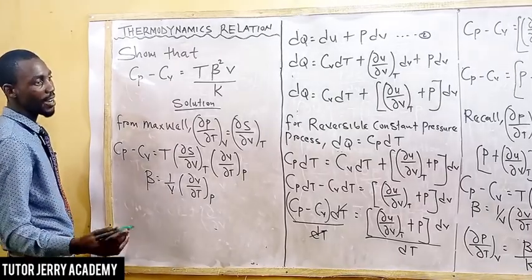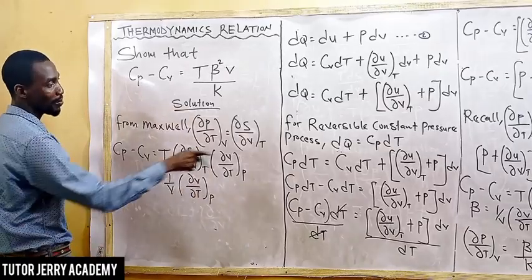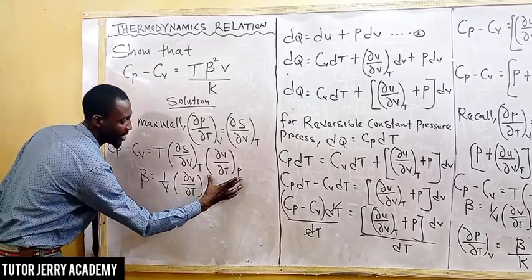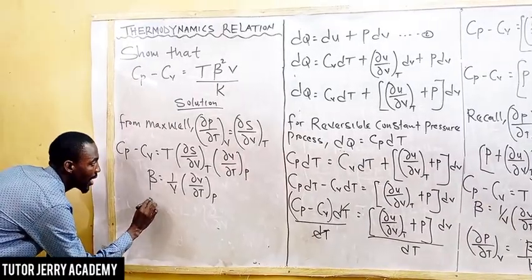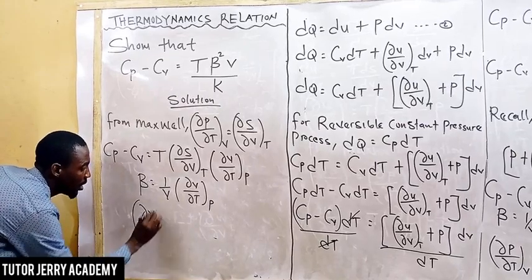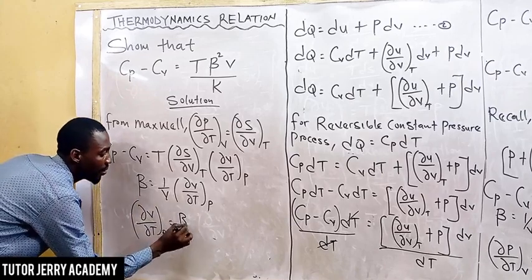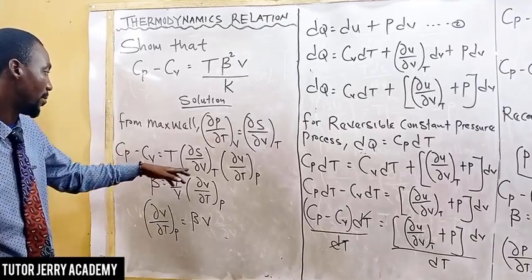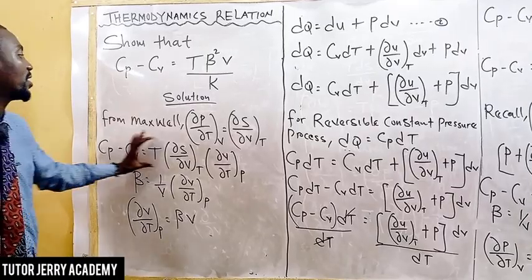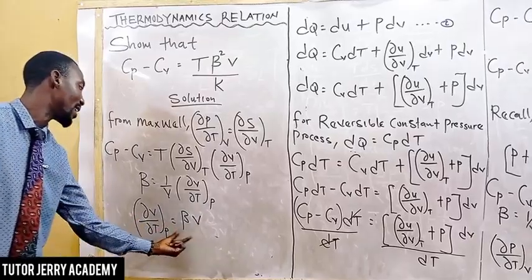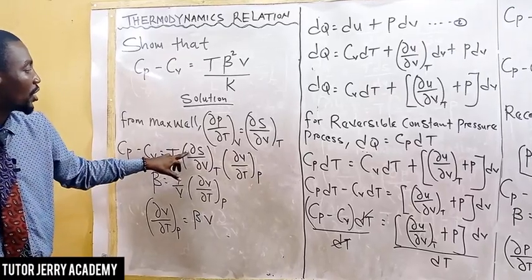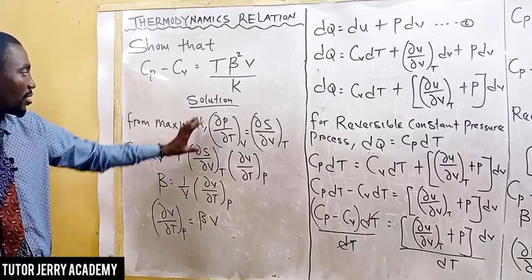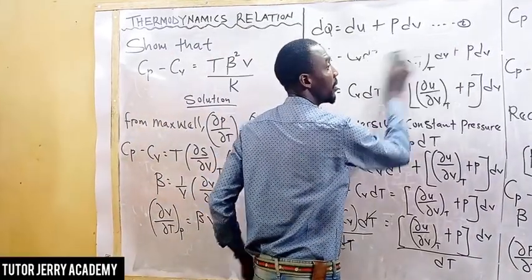Now we make substitutions in our original equation. We have an expression for the partial differentiation of V with respect to T, keeping P constant, which is beta V. And from the Maxwell equation, the partial differentiation of S with respect to V, keeping T constant, is replaced by the partial differentiation of P with respect to T, keeping V constant.